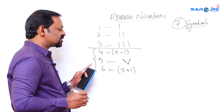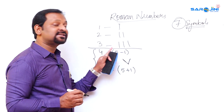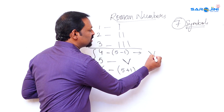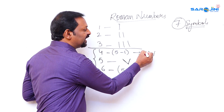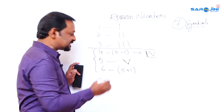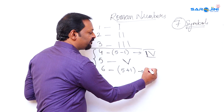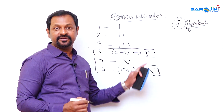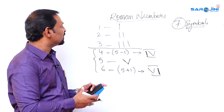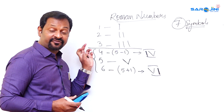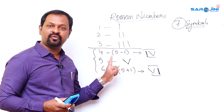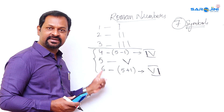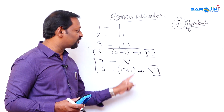To summarize the pattern: five is V; four is five minus one, so write I before V — that gives IV; six is five plus one, so write I after V — that gives VI. Always remember, a minus value goes on the left side and a plus value goes on the right side. This is the key difference everyone must understand.